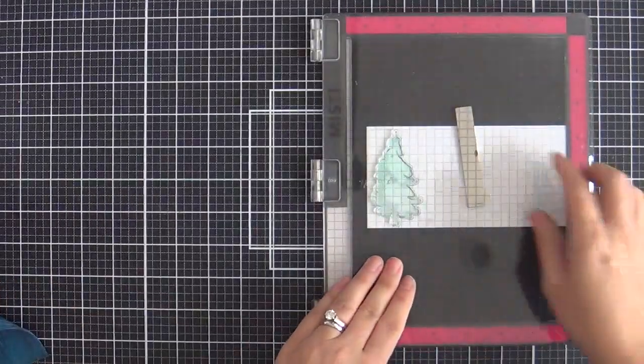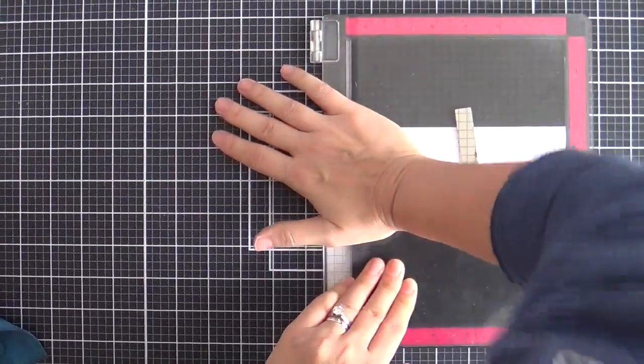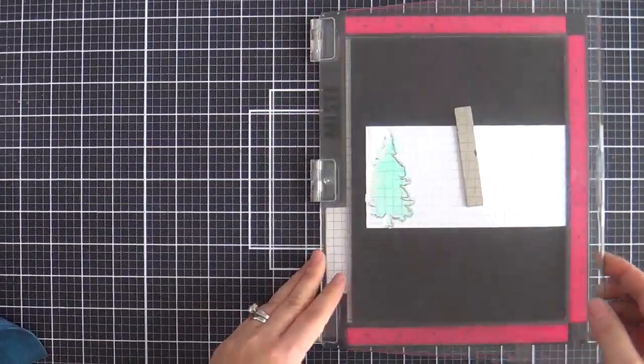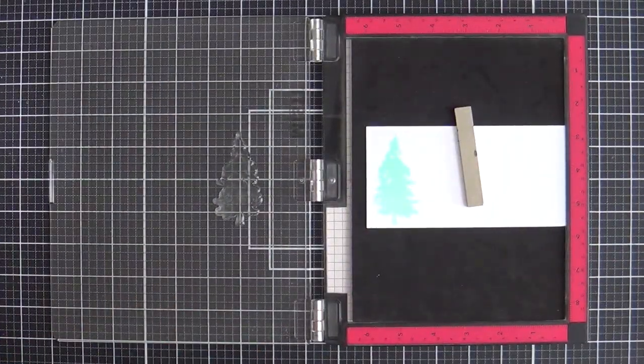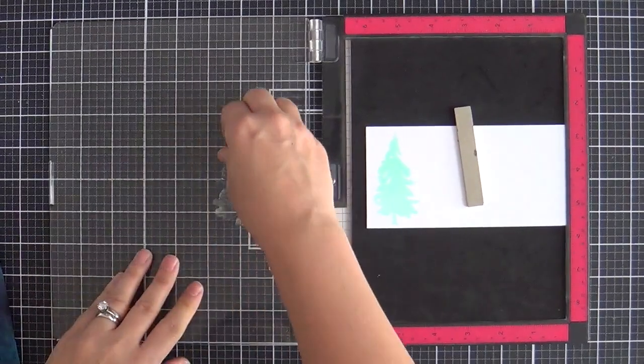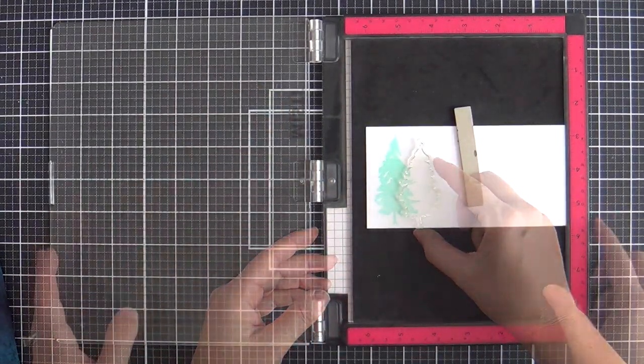And I'm stamping with Altenew Mountain Mist. I'm going to be using Altenew inks. I love that they come in families, like groupings of four. So you get four shades of the same color family. So that was Mountain Mist.